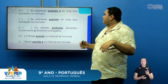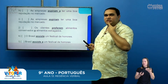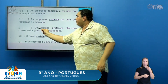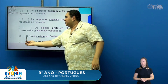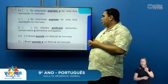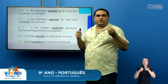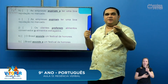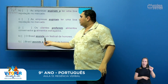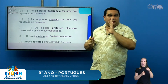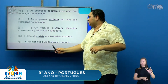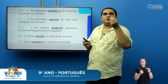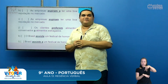Letra J: 'Os clientes preferem alimentos conservados a alimentos estragados.' Está verdadeiro — quem prefere, sempre prefere algo a algo, e aqui aparece a preposição 'a'. Letra K: 'O Brasil assiste um festival de horrores.' O verbo assistir no sentido de você ver, presenciar algo é transitivo indireto — deve receber a preposição 'a' ou 'ao'. Como não aparece a preposição, a frase está falsa. Letra L: 'O Brasil assiste a um festival.' Sentido de ver, de ser espectador — ele vai receber a preposição 'a'. A frase está verdadeira.